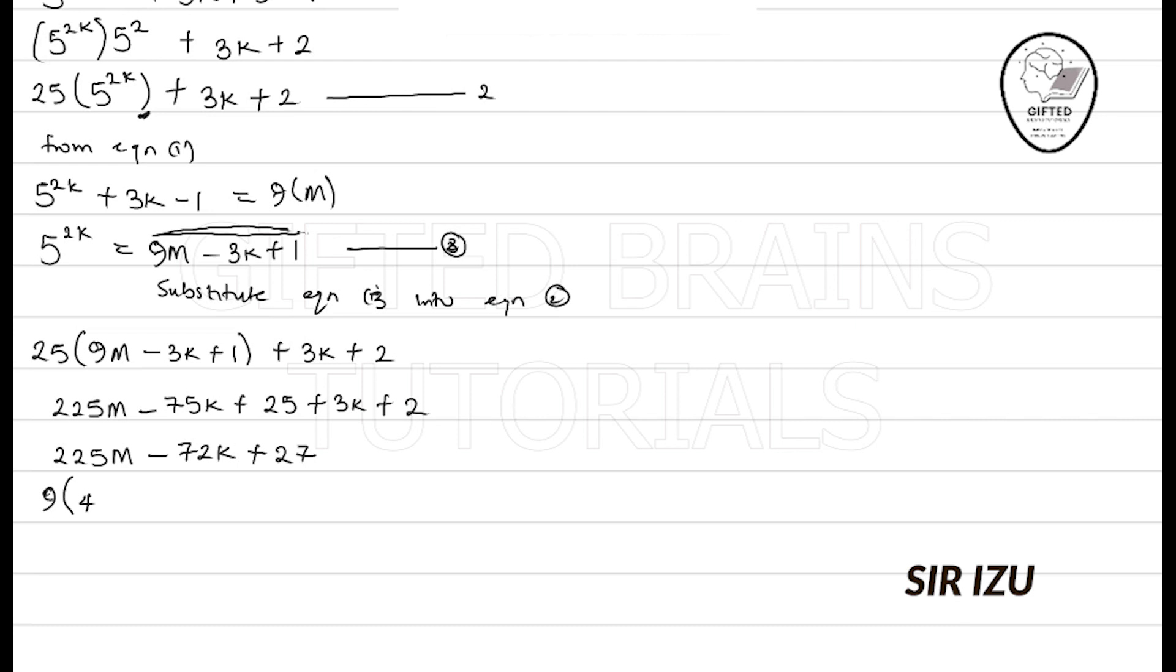We have 25, sorry, not 45, sorry, 25. We have 25m - 8k + 3. And so, that's about that.